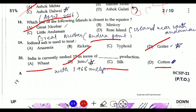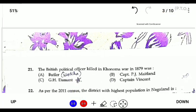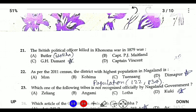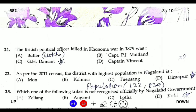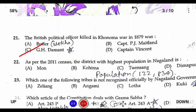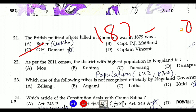Question twenty-one: the British political officer killed in the Kohima War was J.H. Damant. The Battle of Kohima lasted from 1879 to 1880, when the Angami Nagas finally surrendered before the British.